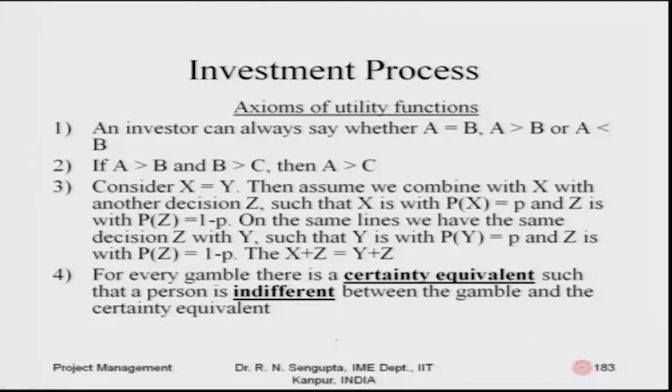Utility functions have some axioms — conceptually very interesting rules. They have no direct consequence on how we solve problems; utility problems will mainly be from the point of view of decision tree analysis and general utility concepts, which we will use in the areas of project management. An investor can always say whether A is equivalent to B, A is better than B, or A is not as good as B — meaning my choices are: I am indifferent between A and B, inclined to take A, or inclined to take B.